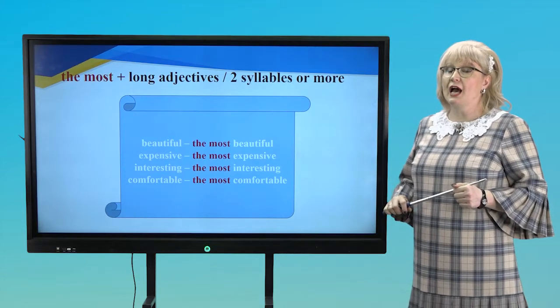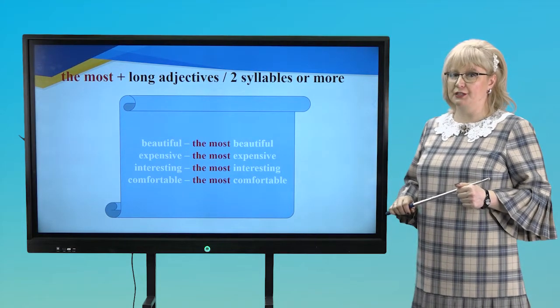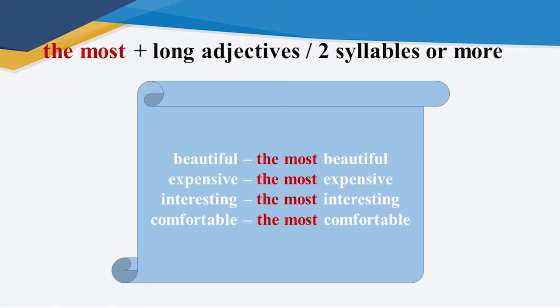If adjectives have two syllables or more, we use the most before adjectives. For example, beautiful the most beautiful, expensive the most expensive, interesting the most interesting, comfortable the most comfortable.